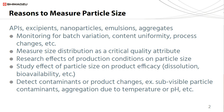There are many reasons why you may need to measure particle size. For instance, you may want to be monitoring batch variation, content uniformity, or process changes of a manufacturing process. You may want to measure size distribution as a critical quality attribute, or perform research on the effects of production conditions on particle size, or study the effect of particle size on a product's efficacy — for instance, dissolution processes and bioavailability. Or you may want to detect contaminants such as subvisible particle contaminants or aggregation of components due to temperature or pH.